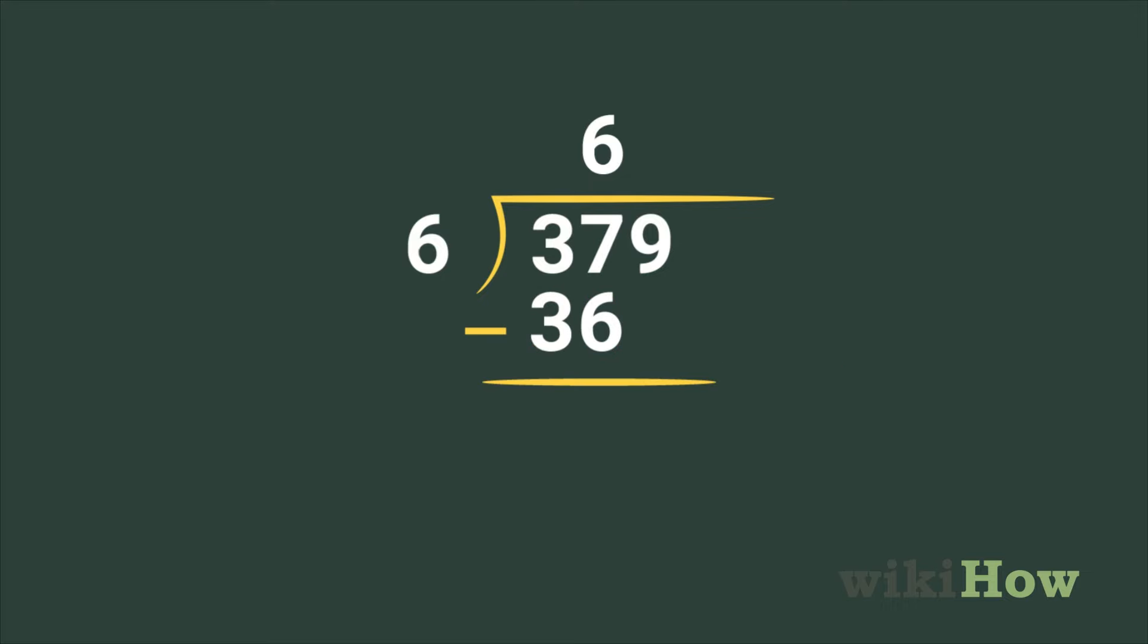Step 5. Subtract the two numbers inside the division bar and write the answer below the two numbers. If there are any remaining digits inside the division bar, bring them down to the new answer.